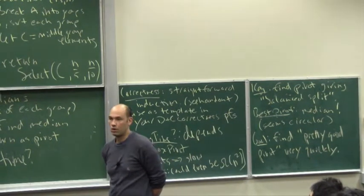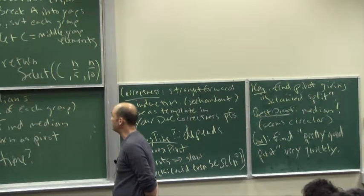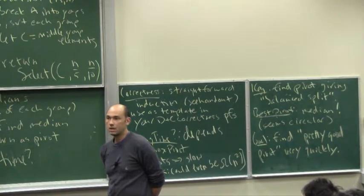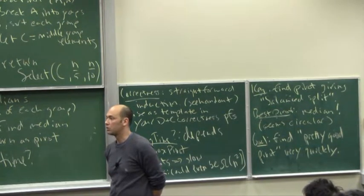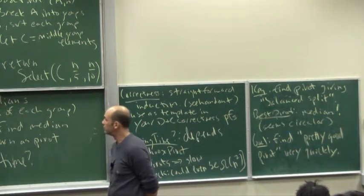Just like, say, merge sort or other things we've seen. So there's a recursive call in 1C, and there's a recursive call in 3. So there's five lines, two of which are recursive calls on smaller sub-problems. The other three of which do work outside of the recursive calls.